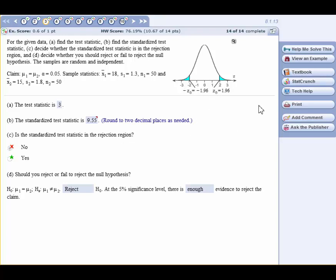So is 9.55 in that area? Well, yeah. 9.55 is way over here somewhere, so it's definitely in the rejection zone. Should you reject the null hypothesis? Yes, we reject the null. And at the 5% level of significance, there is enough evidence to reject the claim, which is the null.